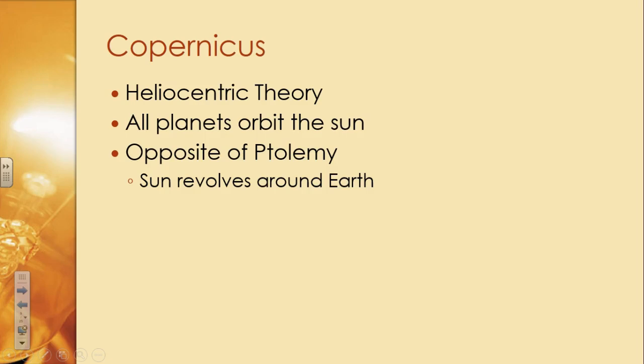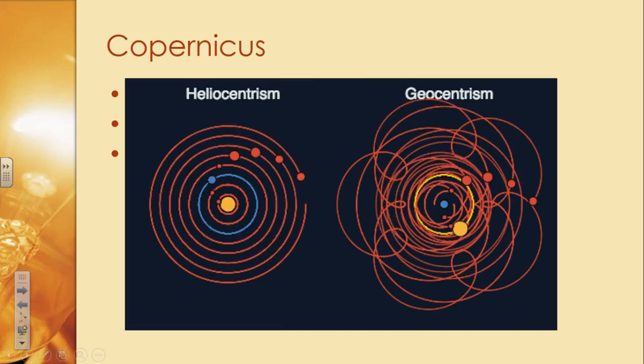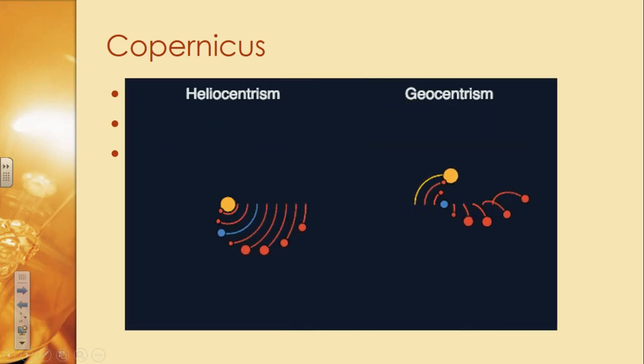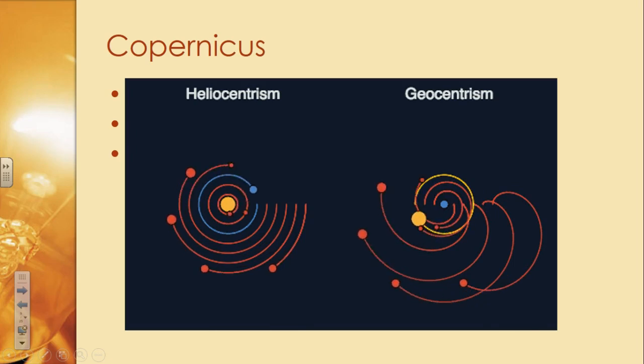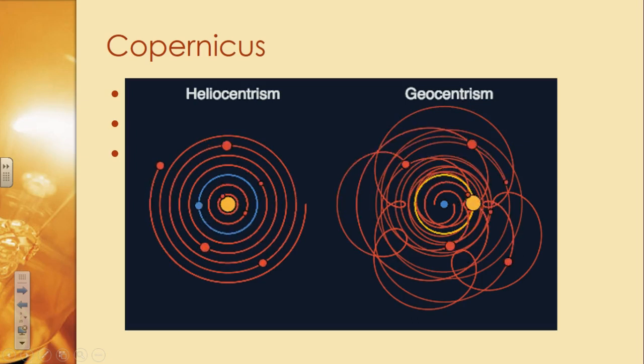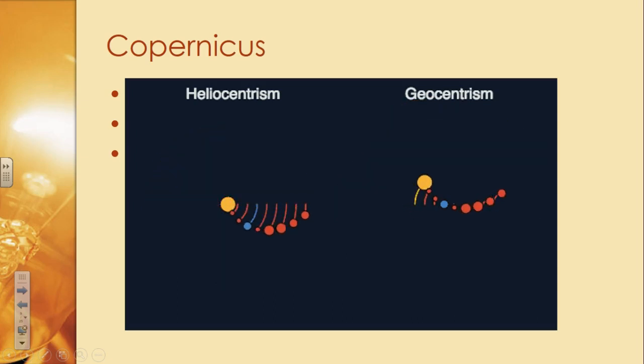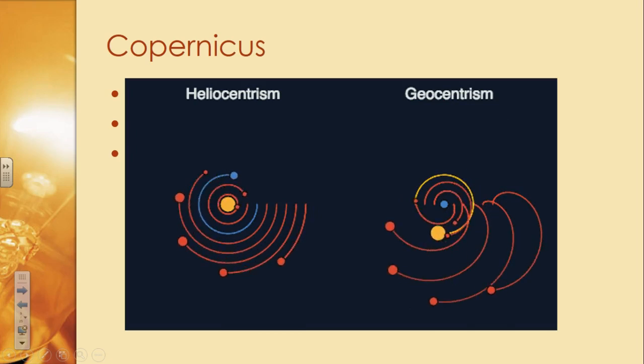Copernicus is going to come around and say, no, wait a minute, that's not right. We're going to mix this up a little bit different. So you look off on the right side of your screen, you see Ptolemy's view of what happens. We've got the Earth sitting there in the middle of the solar system. Everything else is revolving around the Earth. You can see how it looks like it's going just like that. That is Ptolemy's system, the geocentric theory.